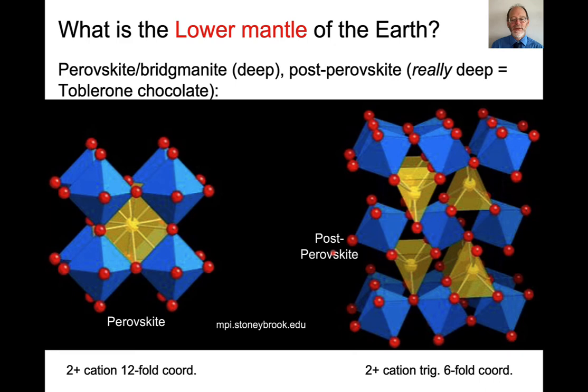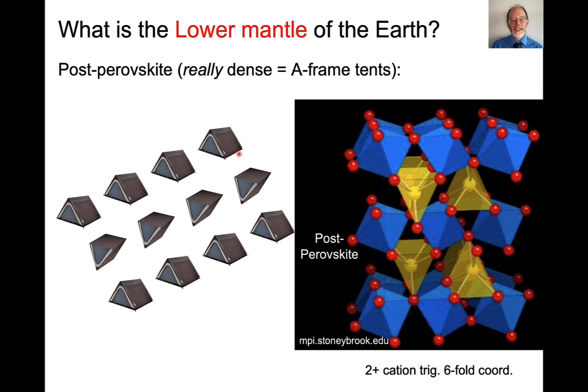Post-perovskite has this rather odd coordination. So here are the octahedra. They're basically the same as these octahedra. But this large site in perovskite turns into this rather strange six-coordinated site that's kind of tent-shaped. And so it's almost like you've got these little tents. So these are the upward-facing tents. And you have these downward-facing tents. And so they go back and forth. And this just turns out to be even more dense than the perovskite structure.